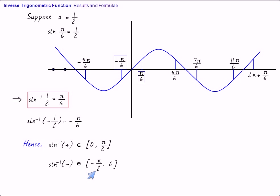Sine inverse positive quantity is obtained by memory, for instance, sine inverse 1 by root 2 is pi by 4. And the minus value is obtained by attaching minus to the corresponding plus case.